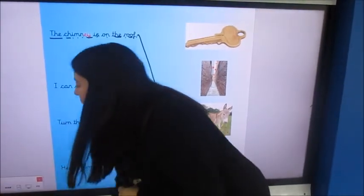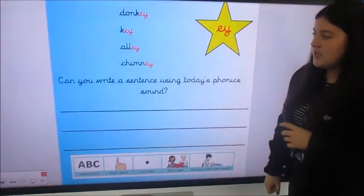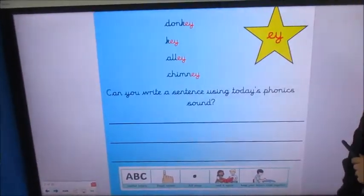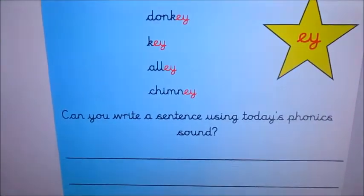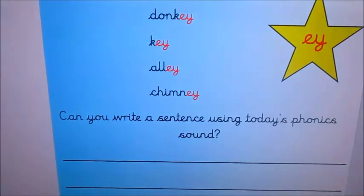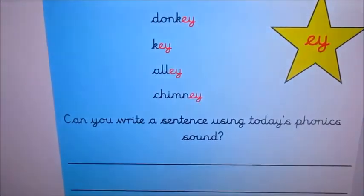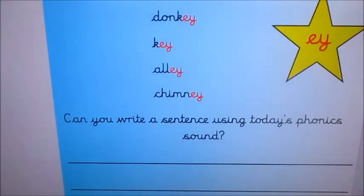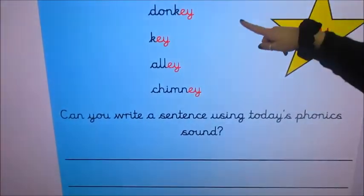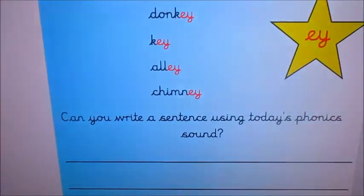Now moving on to our reply. Once you've done that, we're going to think about writing a super sentence on the line, with a capital letter, with a finger space and with a full stop. And I would like you today to try and think of a sentence with the E sound in it with the spelling E, Y. And I've put four words there, or you can use your own. And I'd like you to think of another word within your sentence with one of our other phase 5 sounds.